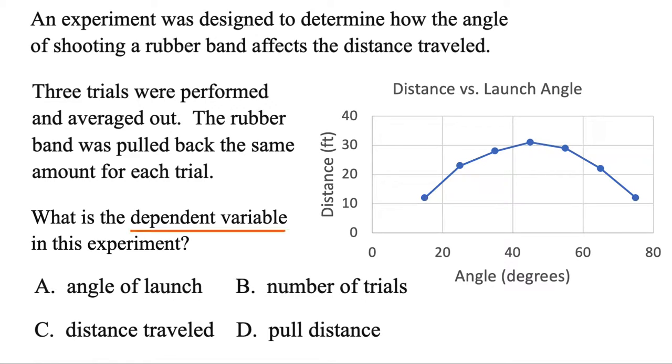One last example here. What is the dependent variable in this experiment? But you can use a little cheat. Because if they give you a graph, you can always make these letters. The bottom, you can turn it into an I. The left side, a D. So the dependent variable is always going to be on this axis. In other words, it's the distance that the rubber band goes here. And the reason that's the dependent variable is the distance depends on the angle that you shoot the rubber band. So distance traveled, that's our dependent variable, and that's it.